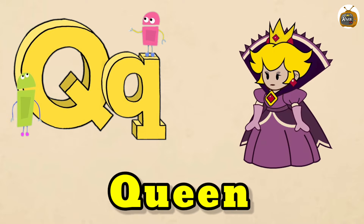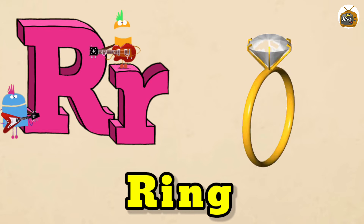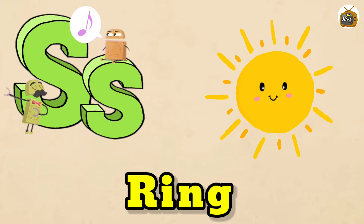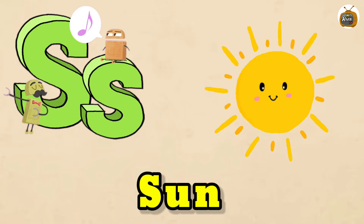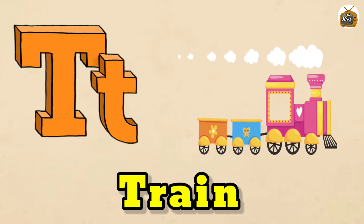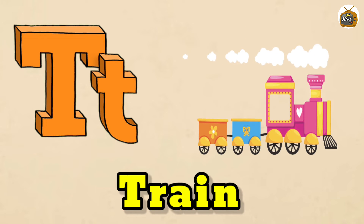Queen. R is for Ring. R, R. Ring. S is for Sun. S, S. Sun. T is for Train. Ch, Ch.